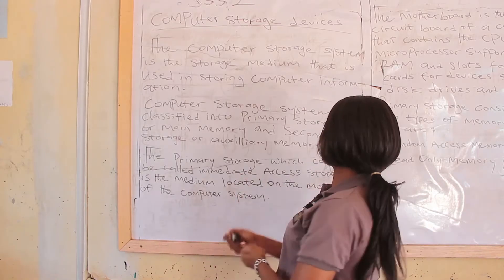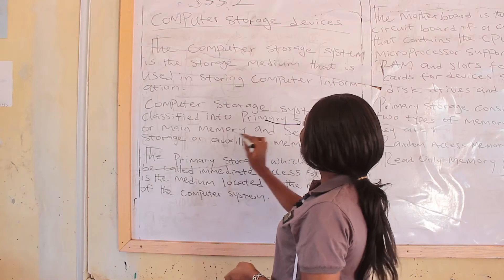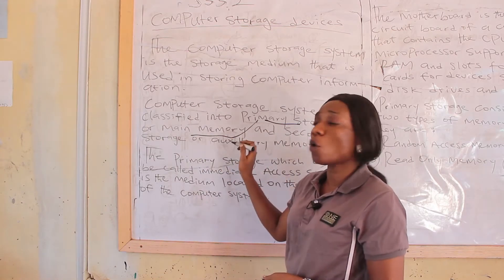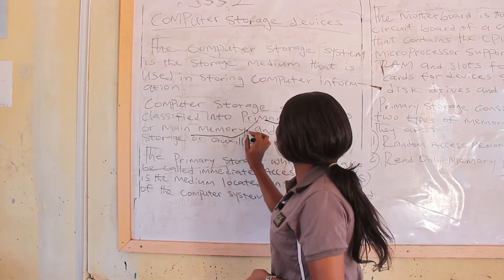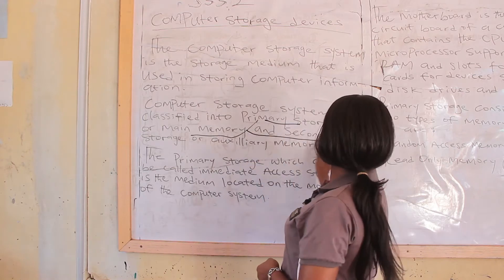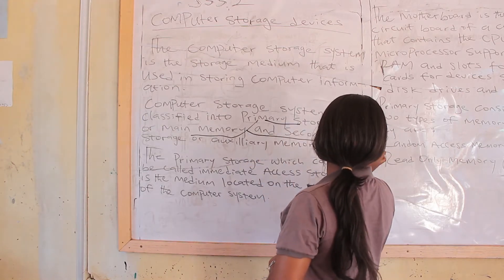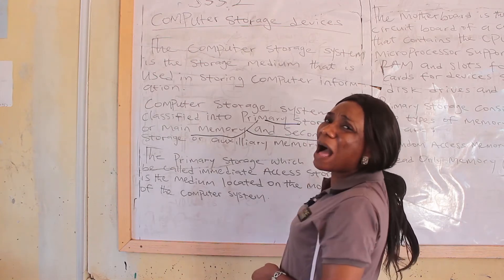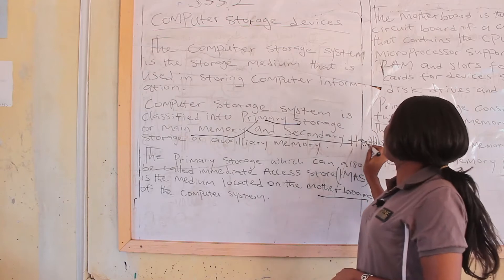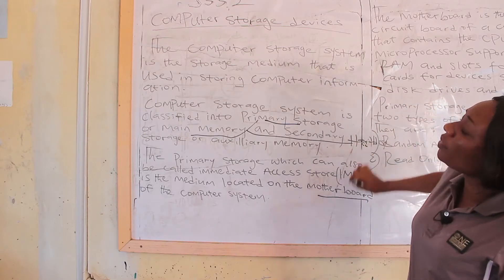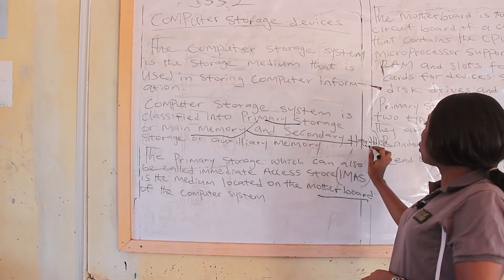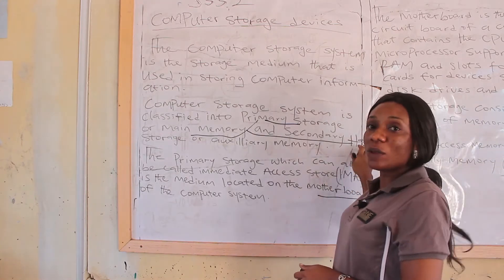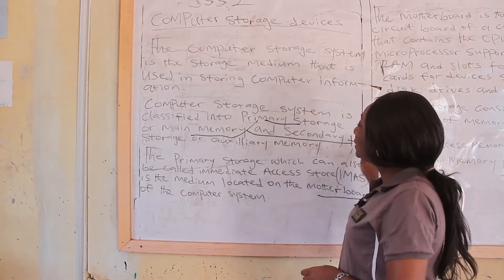The primary storage is called memory because it is where the hard disk is located. This hard disk happens to be the memory where all the work you do on the computer is stored. This is where you save all your work.